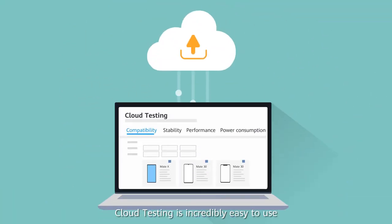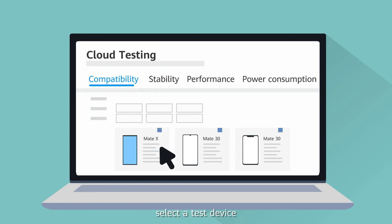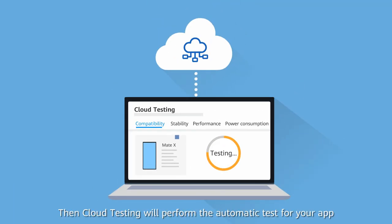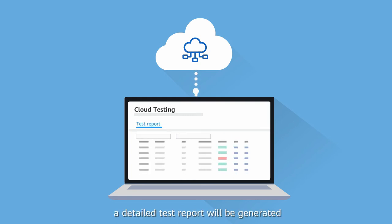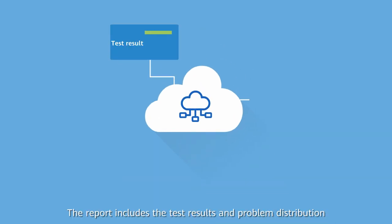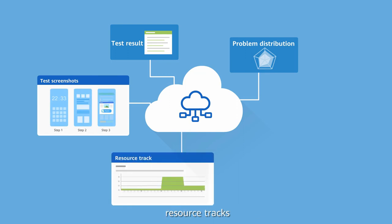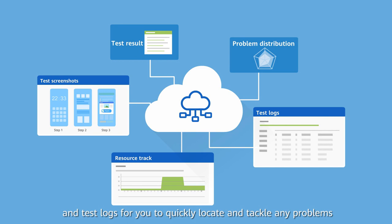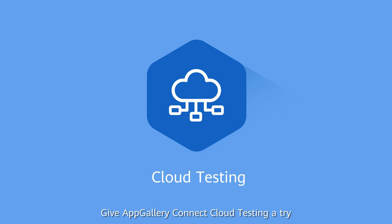Cloud testing is incredibly easy to use. Let's take the compatibility test as an example. First, you'll need to upload an app to be tested, select a test device, and create a test. Then, cloud testing will perform the automatic test for your app. After the test is complete, a detailed test report will be generated. The report includes the test results and problem distribution, as well as test screenshots, resource tracks, and test logs for you to quickly locate and tackle any problems. Give AppGallery Connect Cloud Testing a try to reduce costs and improve test efficiency.